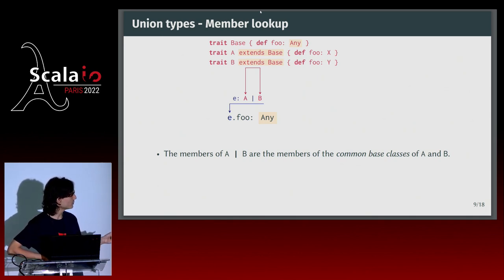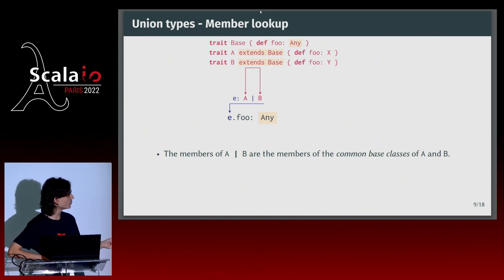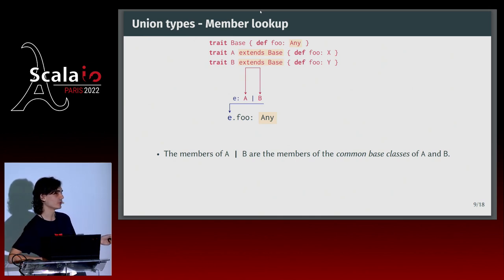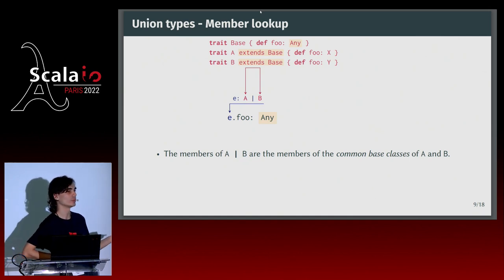What you can do instead is define a base trait, have A and B both extend it with foo defined in the base. Then since foo has documentation in the base, both implementations have to conform to that, and e.foo is meaningful on the union. There's one limitation: the result type will be the base type, but since both override the base, we could maybe give a better result type in a future version of the compiler.